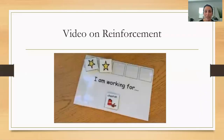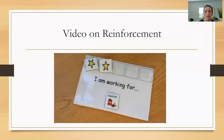That video demonstrated a token economy system on reinforcement. It's for higher functioning students who are working to earn five tokens. Once they get their five tokens, they hand them in and in exchange receive a preferred item like a chip. This is a nice visual way to break down reinforcement for the child.